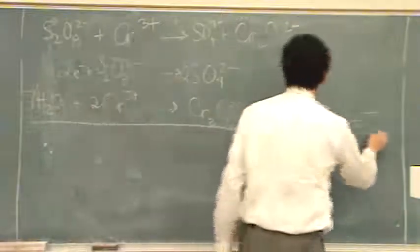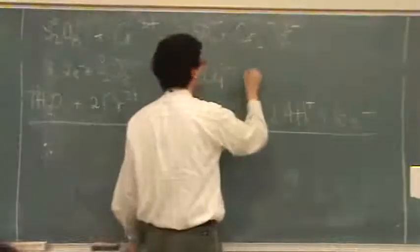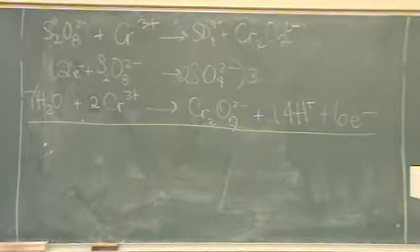So if you add this up, we've got six and two. So I've got to multiply the top by three and I'll leave the bottom as six, because that will let the electrons, six electrons on each side, will cancel.